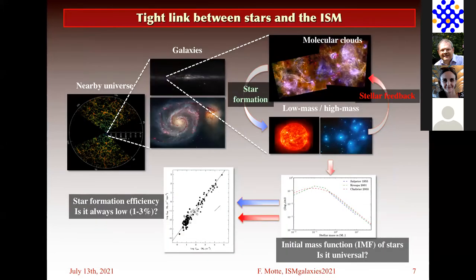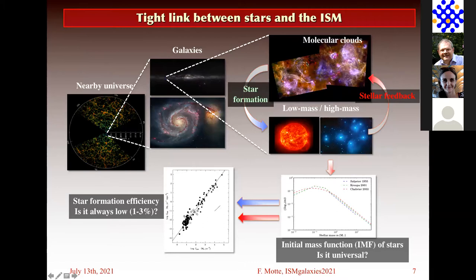Clouds are tightly associated with stars. There is a sketch going from the nova universe to galaxies then to molecular clouds. In this cycle, there is a tight connection between clouds and star clusters — which form and then have stellar feedback on the cloud through outflows, supernovae, ionization, and so on. It's a single entity you are studying when looking at molecular clouds and star-forming clouds.